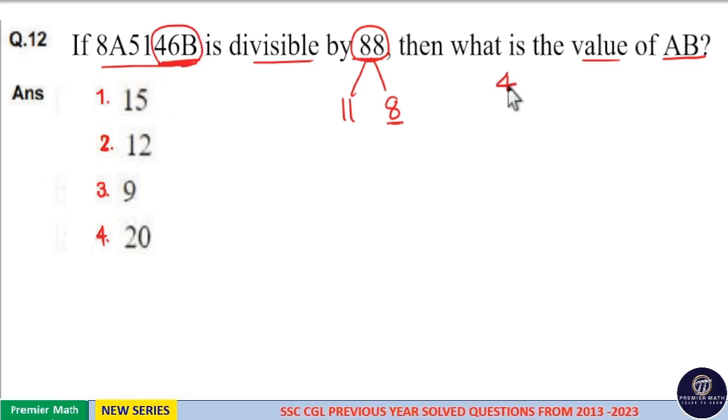So, check 46B. Here, 46B should be divisible by 8. 8 goes 5 times in 40, remaining 6. So, 8 goes 8 times in 64, which means B is definitely 4.